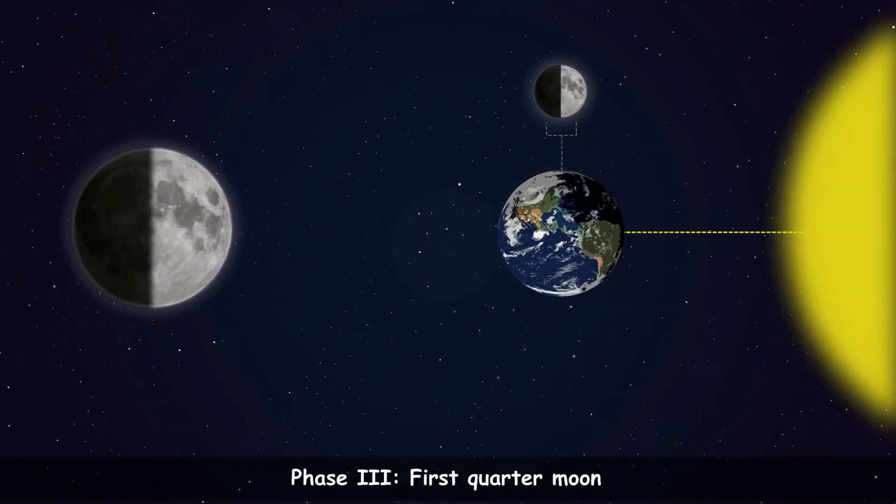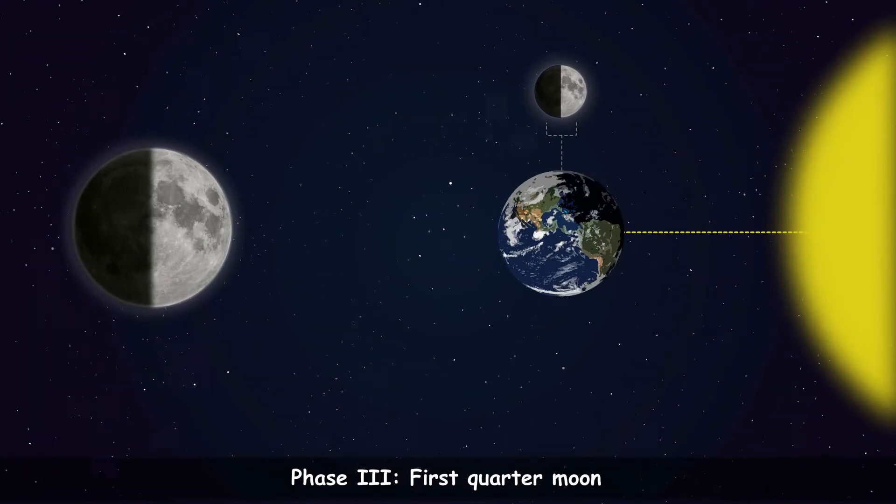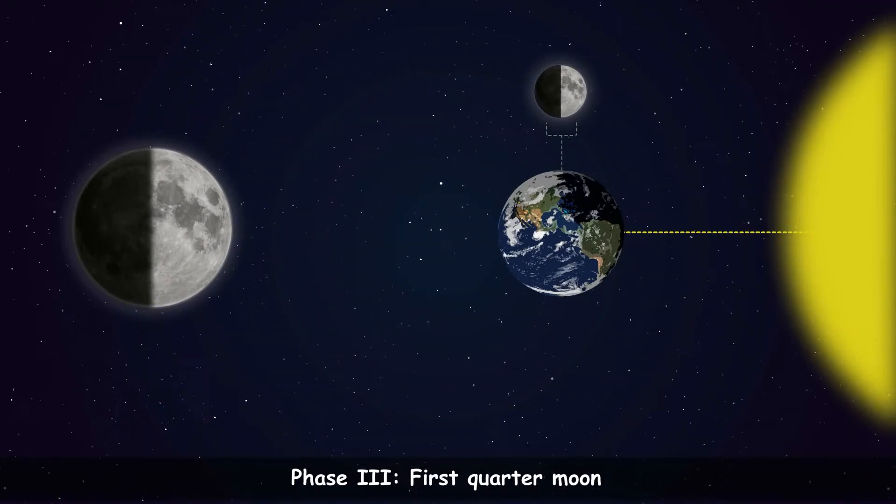Phase 3 is called the First Quarter. In this phase, the moon appears half lit to us.